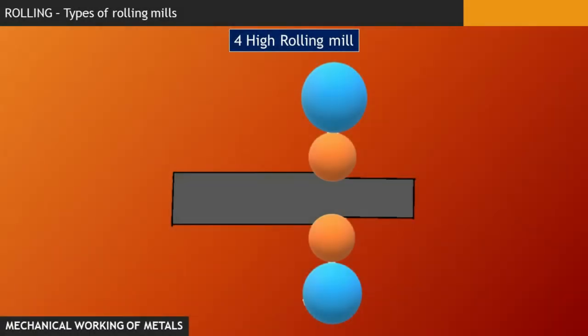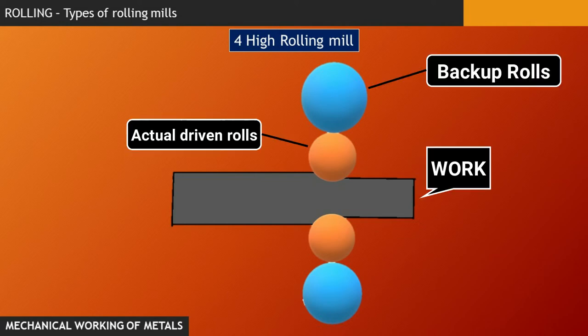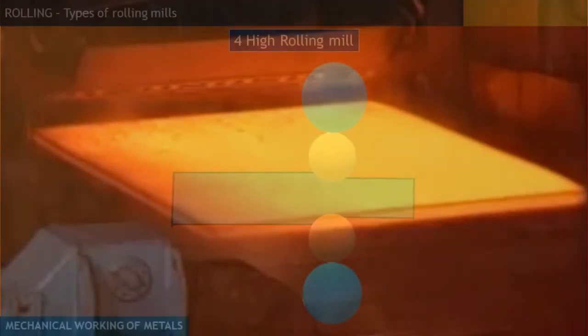And then we have a four-high rolling mill or we also call it backup rolling mill. Here, the diameter of work rolls are kept small, as small as possible to reduce the force and the power requirement. And hence, to avoid bending of these small size rolls due to their low strength and rigidity, large diameter backup rolls are installed. And this results into a four-high rolling mill. The backup rollers here are not driven. They are driven by the smaller rolls. And hence, there is no external power supply to the backup rollers.